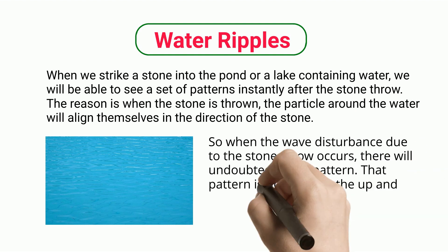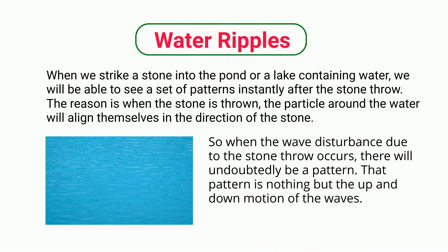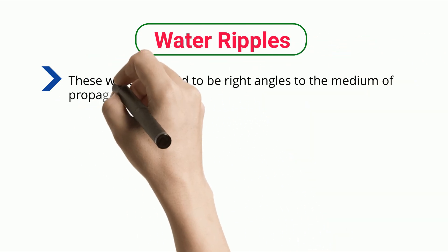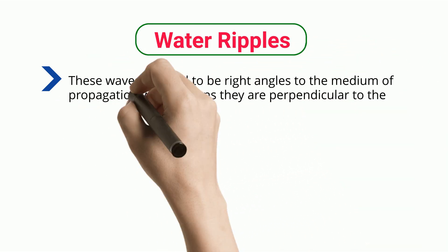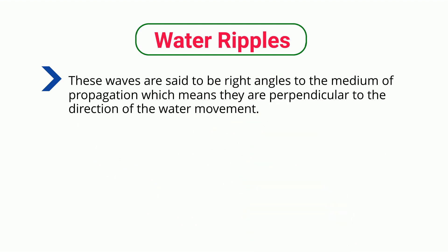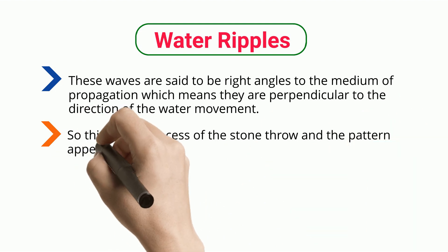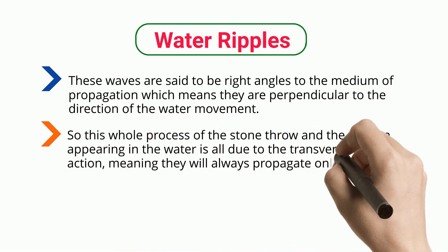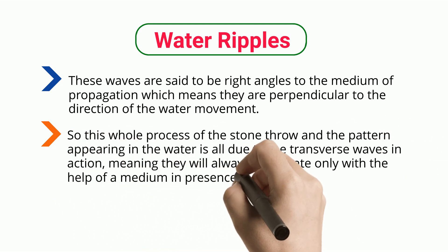That pattern is nothing but the up and down motion of the waves. These waves are said to be at right angles to the medium of propagation, which means they are perpendicular to the direction of the water movement. So this whole process of the stone throw and the pattern appearing in the water is all due to the transverse waves in action, meaning they will always propagate only with the help of a medium in presence.